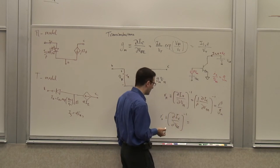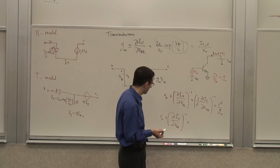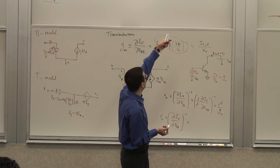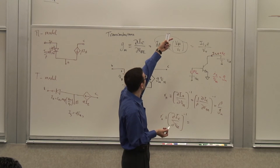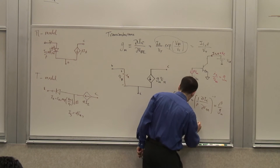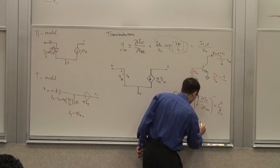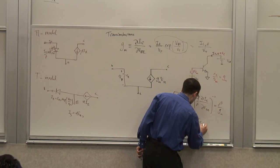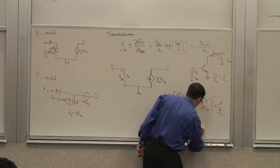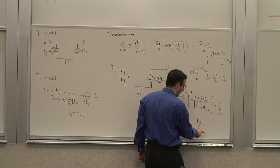Differentiating that expression is very simple — what I get is a factor of 1/VA. And approximately, Ro = VA / IC_Q. So the output resistance is VA divided by the quiescent collector current.